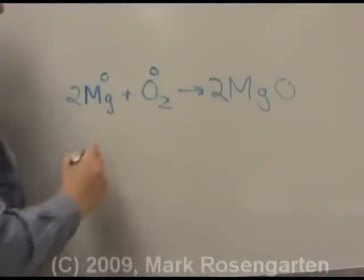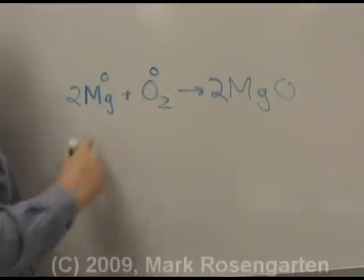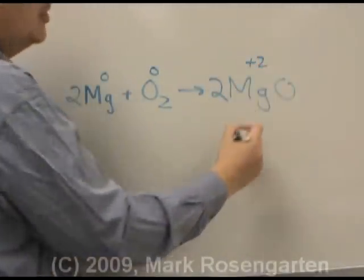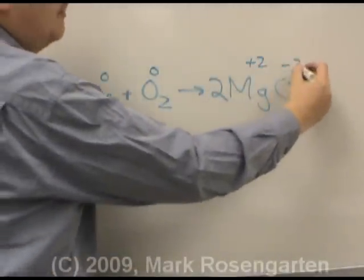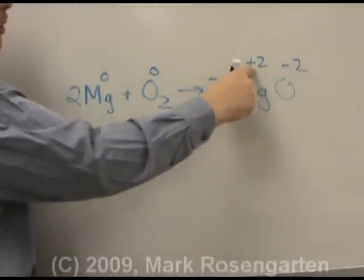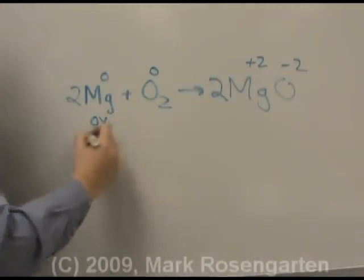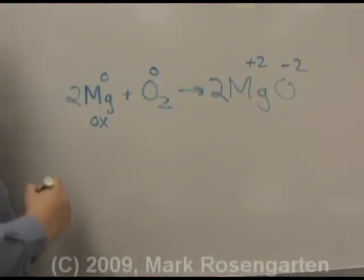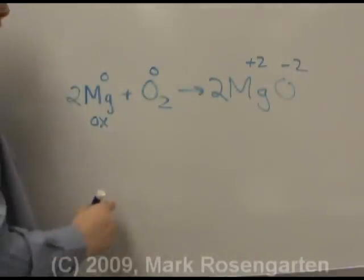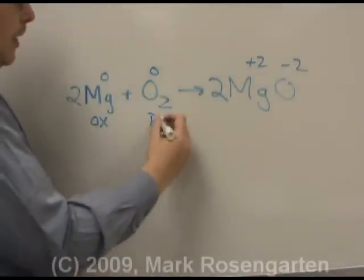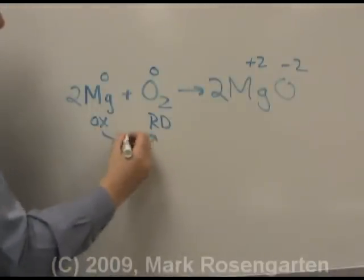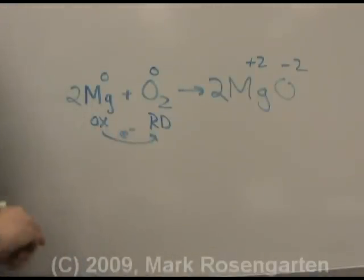Magnesium and oxygen both start off with no charge because they're not in a compound. Magnesium becomes a plus two charge, oxide minus two. Therefore, since magnesium increased its charge to a more positive value, it underwent oxidation. And because the oxygen became more negative in charge by picking up electrons, it underwent reduction. Electrons went from the magnesium to the oxygen.